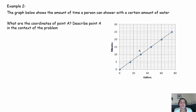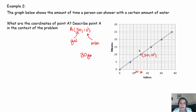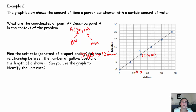What are the coordinates of point A, and what does it mean in context? The scale goes by 5s, so point A is at (30, 10). That means if you use 30 gallons of water, you've taken a 10-minute shower.